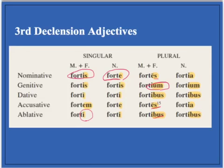And then for the neuter, it goes: forte, fortis, forti, and then forte — just because of the neuter law: for all neuter nouns, pronouns, and adjectives, nominatives and accusatives are the same. I in the ablative singular. And just like mare, it's ia, ium, ibus, ia, ibus.